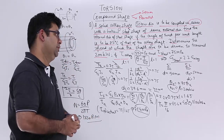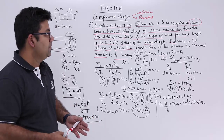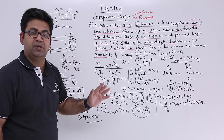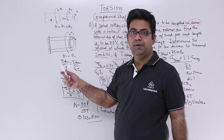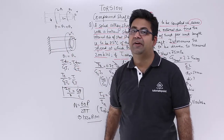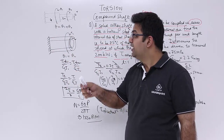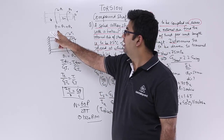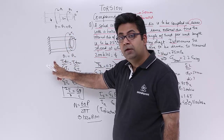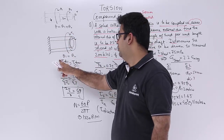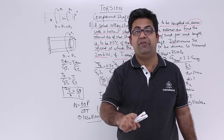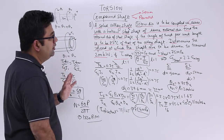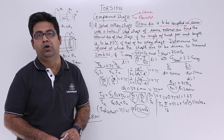In summary, compound shafts involve shafts in series or in parallel. In series, the torque transmitted is the same but the total angle of twist equals theta1 + theta2. In parallel, the lengths and angles of twist are equal but the torque transmitted is different in each shaft. I hope you understood this entire video. Now let's move on to some questions on torsion.